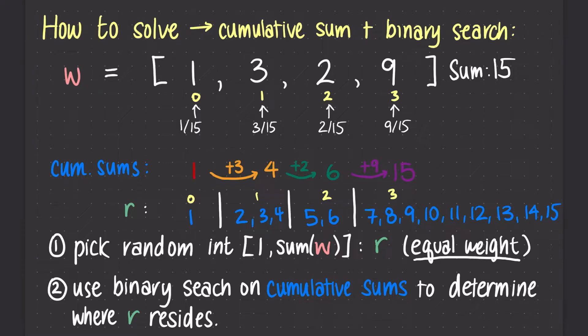For the case of w, the cumulative sum of index 0 would be just 1 because that is its own value so far. The cumulative sum of index 1 would be the cumulative sum previously added with its current value giving us 4.